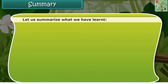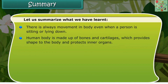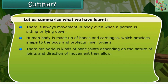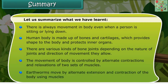Let's take a quick recap. There is always movement in the body, even when a person is sitting or lying down. The human body is made up of bones and cartilage, which provide shape and protect inner organs. There are various kinds of bone joints depending on their nature and direction. Movement is controlled by alternate contractions and relaxations of two sets of muscles.